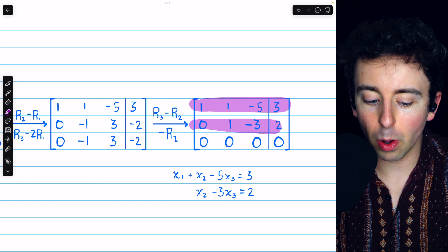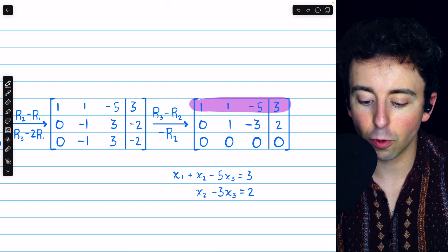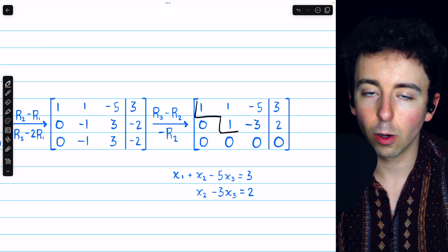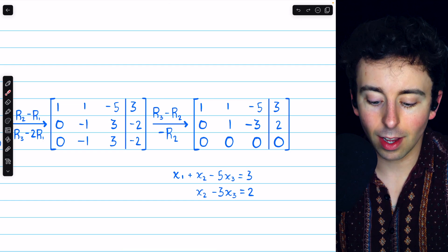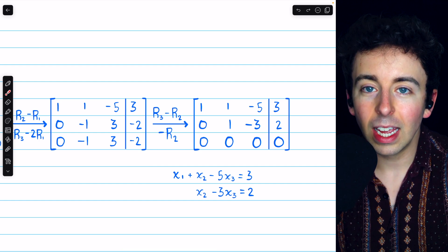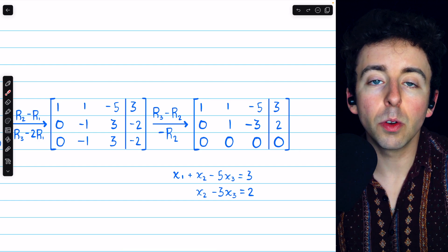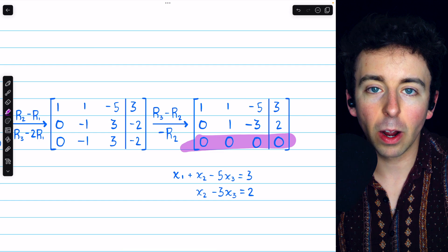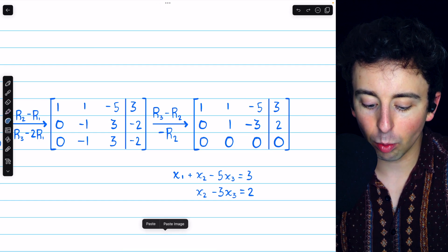But the non-zero rows both have positive 1 as their first non-zero entry. And as before, the 1's occur to the right as we go down the matrix. Now, row 1 gives us this equation, and row 2 gives us this equation. In the previous example, row 3 told us the value for x3. But in this case, row 3 is all zeros. So, in fact, there is no restriction on x3.